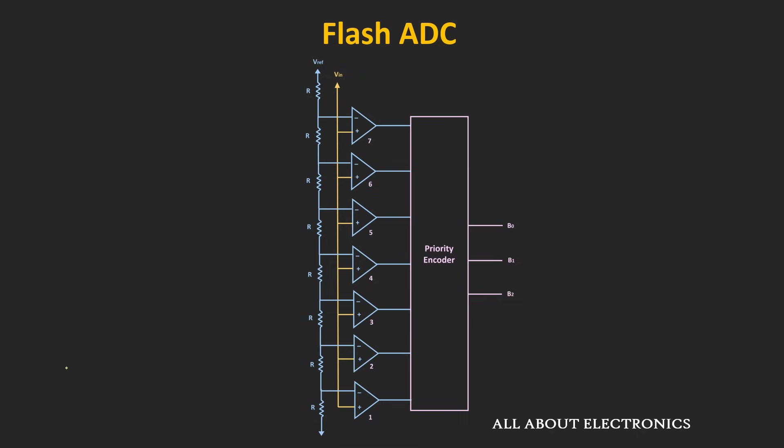For an n-bit Flash ADC, it consists of a total of 2 to the power n minus 1 comparators. And if you see the resistive voltage divider circuit of that n-bit Flash ADC, it consists of a total of 2 to the power n resistors.